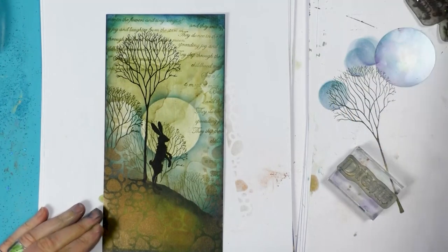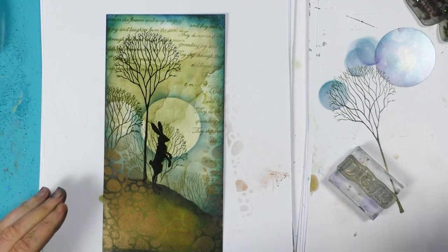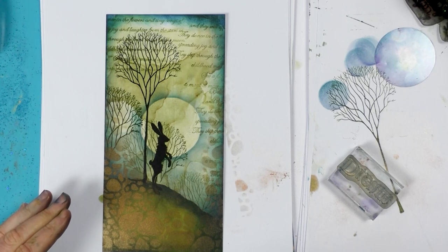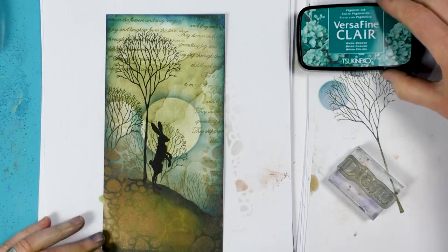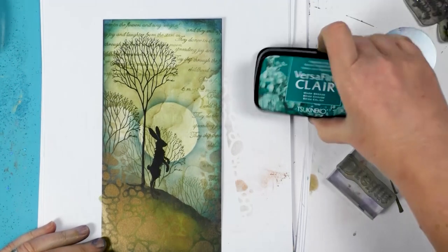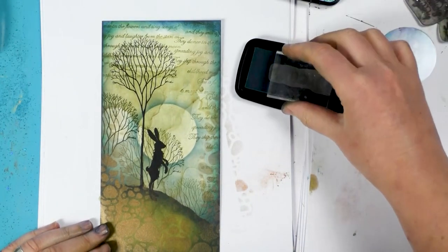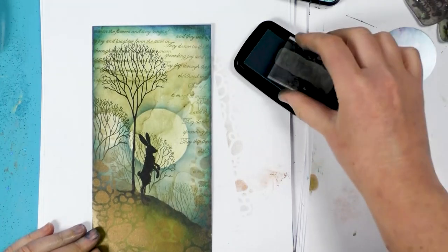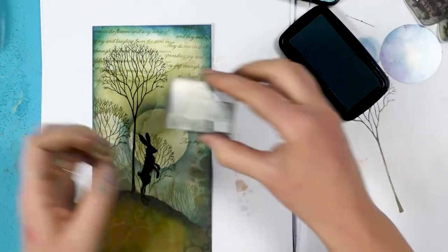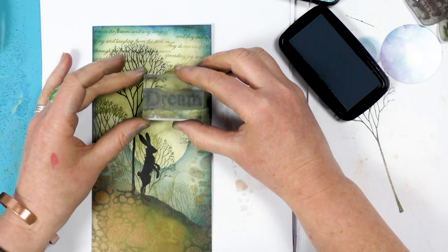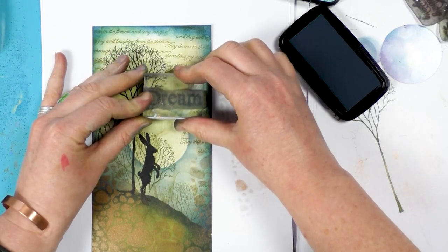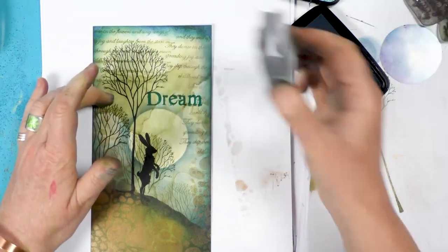Okay, so color-wise, what should we go with? Maybe we'll go with Warm Breeze. So inking up, make sure it's the right way around, and we're just going to pop that down, like so.